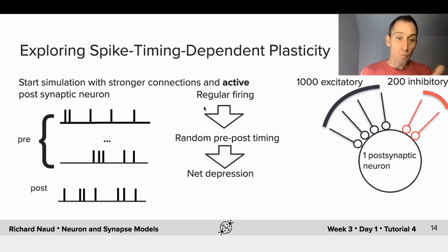To summarize, when we initialize the system at a point where it's outweighed by excitation, we get regular firing, random sampling on the pre-post timing on the plasticity window, net depression, and irregular firing, an irregular firing that looks a lot like what we see from cells in vivo.